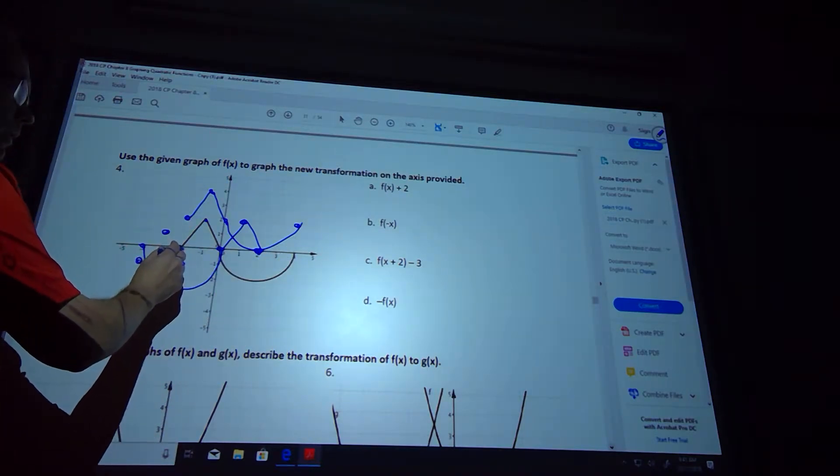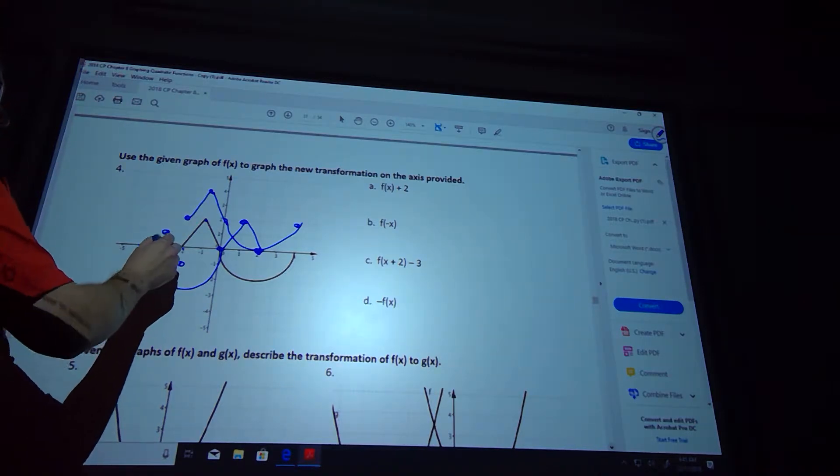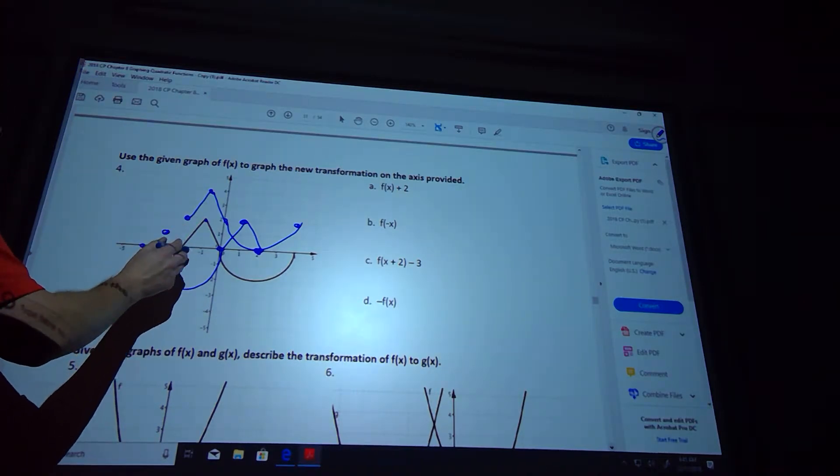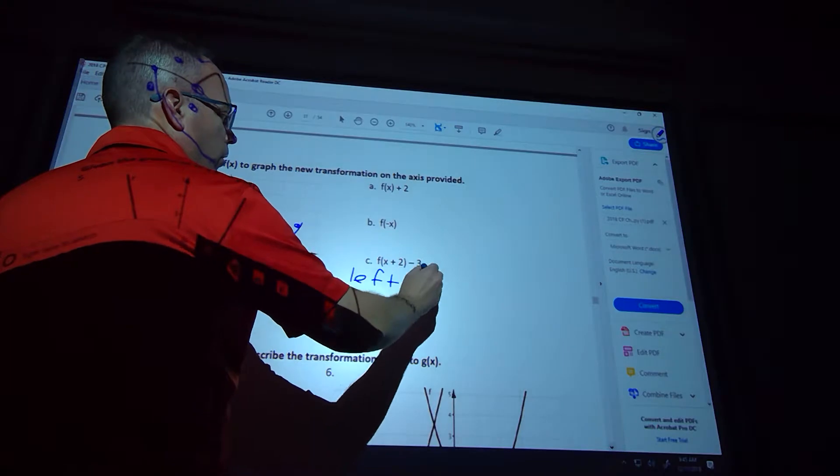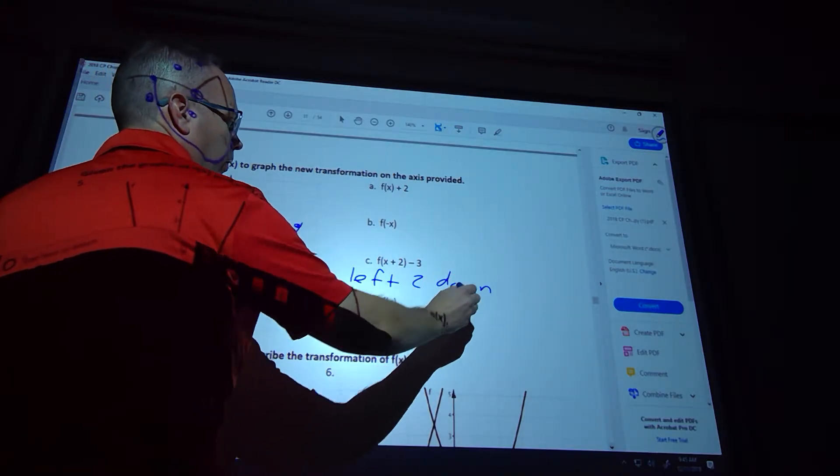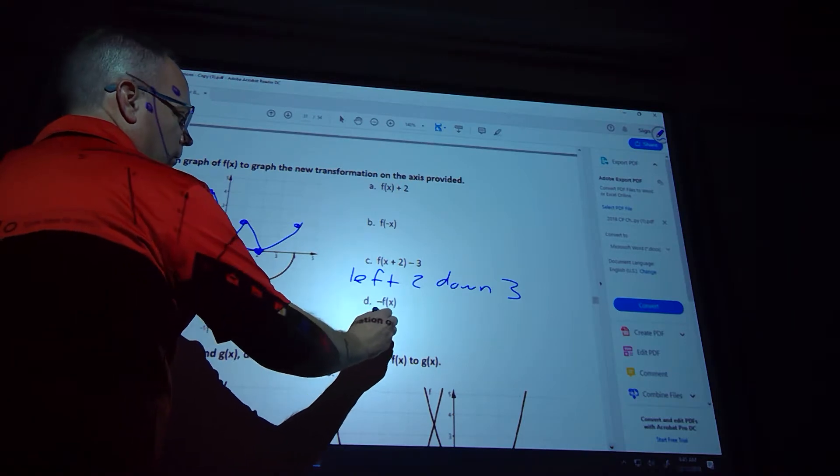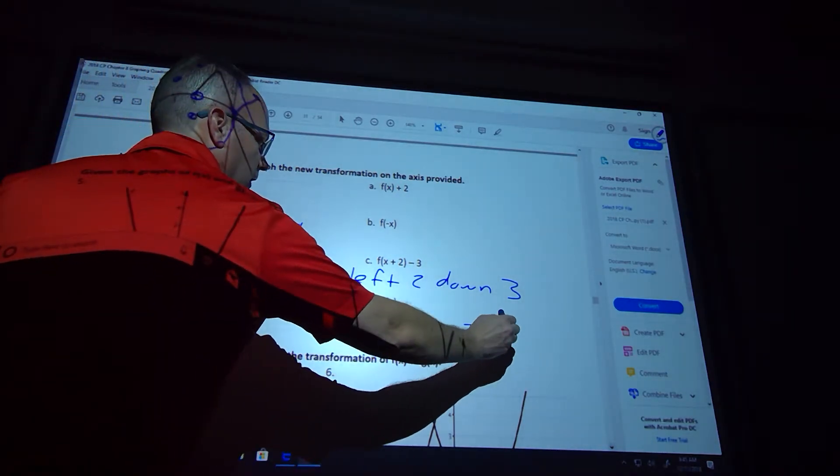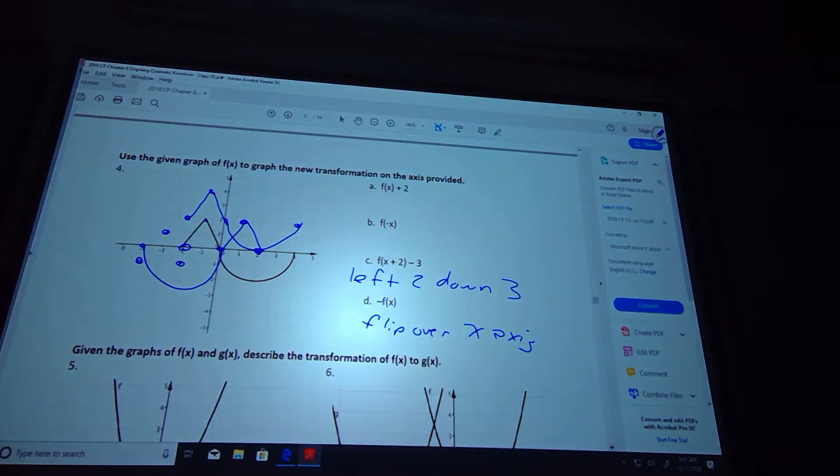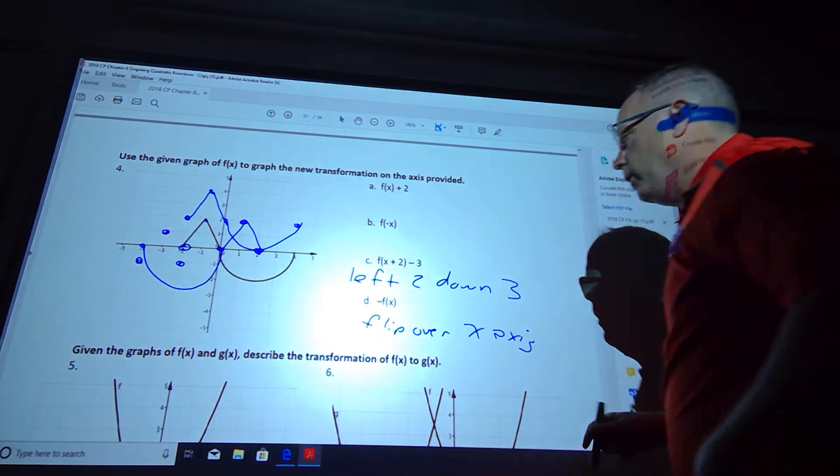Oh, I forgot that one. Left 2, down. Oh shoot. I was doing this one incorrect. I'm going off the black. Go off the black. I apologize. So, left 2, down 3. It might be better if your teacher works it in class. And then this one flips over the x-axis. Again, it's getting a little too congested on the board. But ask your teacher, and I'm sure they will work that out for you.